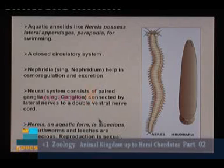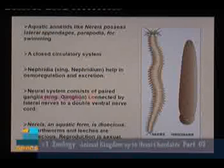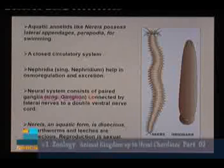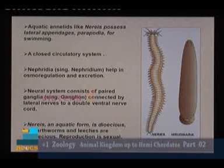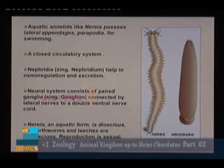Regarding reproduction: Nereis is dioecious — sexes are separate with male and female individuals. But earthworms and leeches are monoecious — sexes are united, and both male and female sex organs are present in the same individual. Reproduction is always sexual.